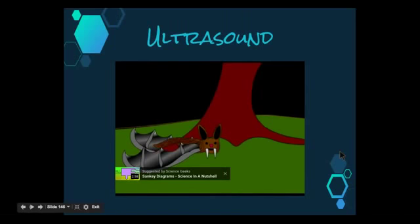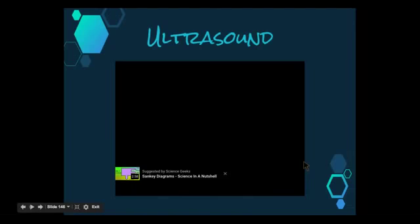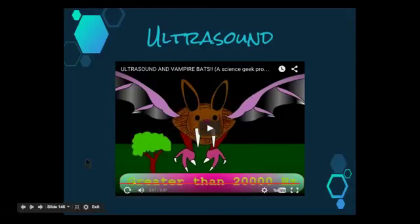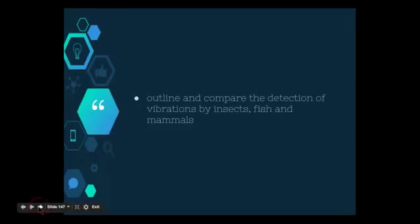So we're going to have a look a little bit further at how bats detect different frequencies to humans and how they use that in order to survive. The first top point that this video is looking at is outline and compare the detection of vibrations by insects, fish, and mammals. So, it's just an outline, so briefly describe and then compare the difference in detection of these three groups of animals.